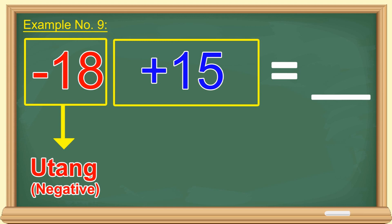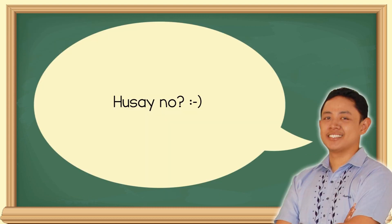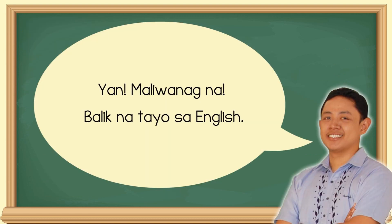Pera. Pag binayaran mo ang utang mo, anong matitira? Utang o sukli? Utang pa rin. At magkano pang utang mo? 3 pesos. At dahil utang, positive o negative? Negative. So, that's negative 3. Husay, no? Yan. Maliwanag na. Dahil dyan, balik na tayo sa English.